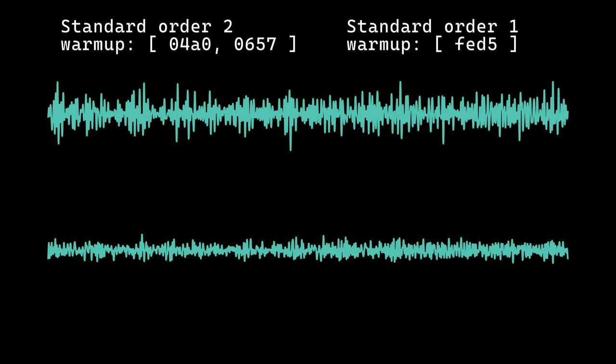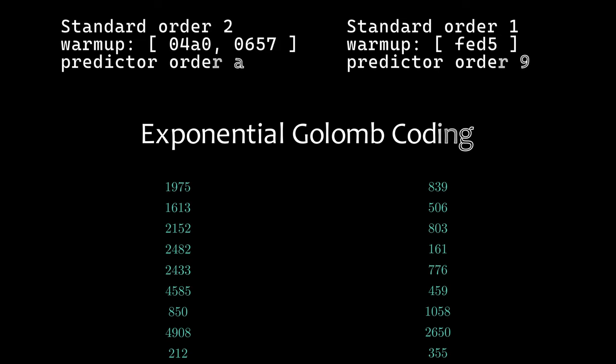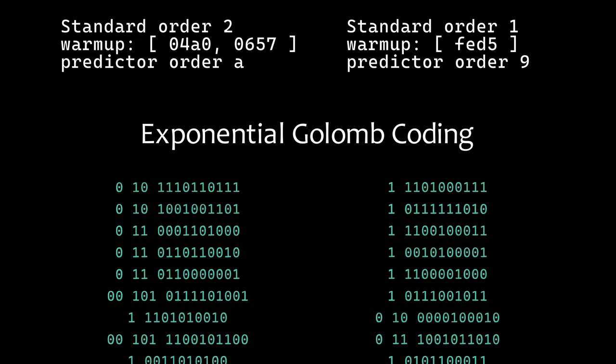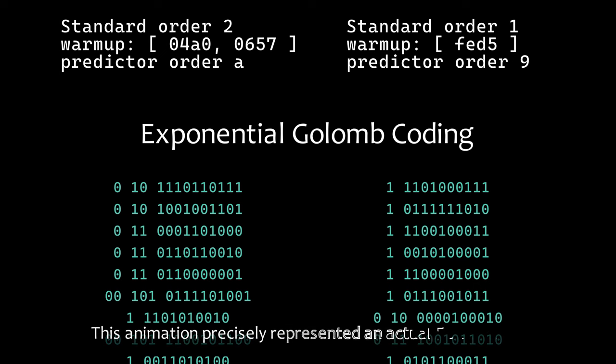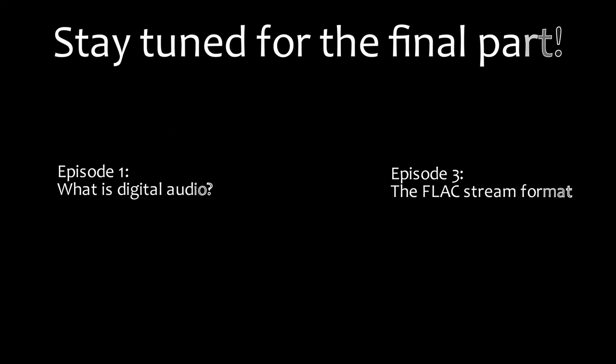We store the coefficients of the LPC as well as the warm-up and treat the difference between encoded and actual signal as the residual. The residual is then encoded with an exponential Golomb code of arbitrary order. Here, I want to end the second video. You now understand all the theory behind FLAC's audio compression, but in the final video, I want to look at how that works in practice.